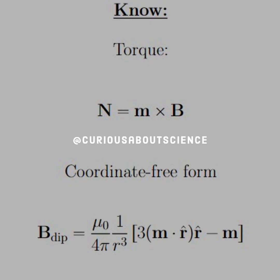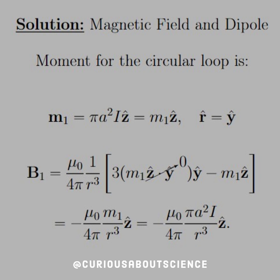What we need to know is that the torque N is equal to the magnetic dipole cross the magnetic field. This dipole field can be written in the coordinate-free form, which we've seen before. The magnetic dipole moment for the circular loop is M1 equal to the vector area times current, which is π A² times I, and we'll call it M1 ẑ. Also note that R-hat is pointed in the ŷ direction, so the magnetic field contribution gives ẑ · ŷ = 0, and in the ŷ direction minus M1 ẑ. Simplifying, B1 = (μ₀/4π)(π A² I / R³) ẑ.